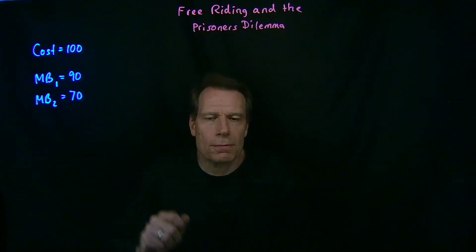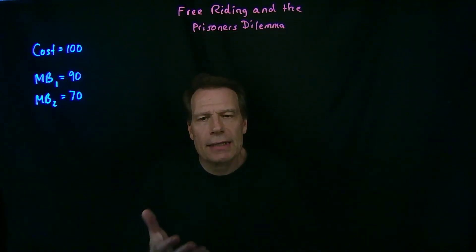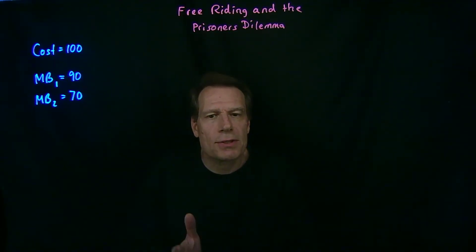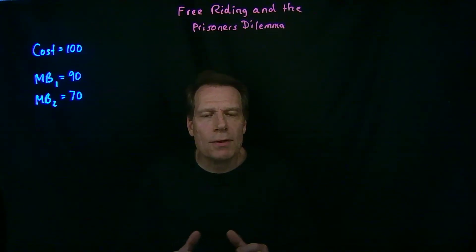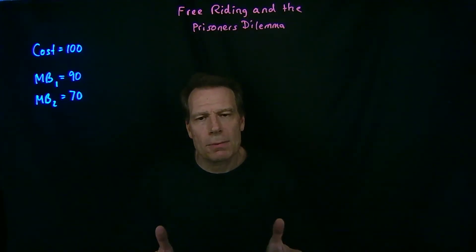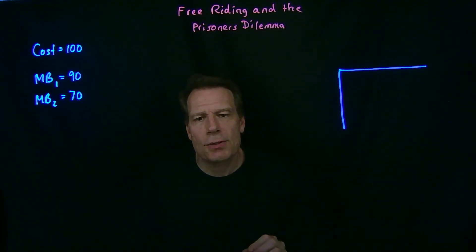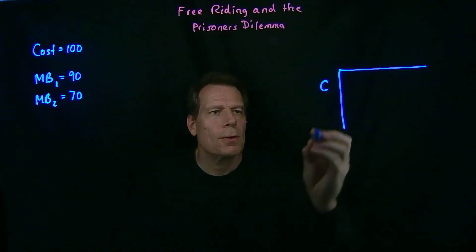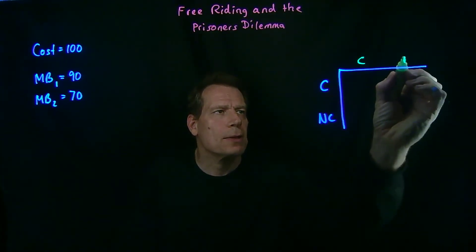So here we have two points on our demand curves: the first package is worth $90 to us, and the second package is worth an additional $70. We can now think about a payoff matrix that emerges from the game we play when we individually decide whether to contribute a package of fireworks to our backyard display. Each of us has a choice between contributing — buying one at the store and bringing it to the backyard — or not contributing.